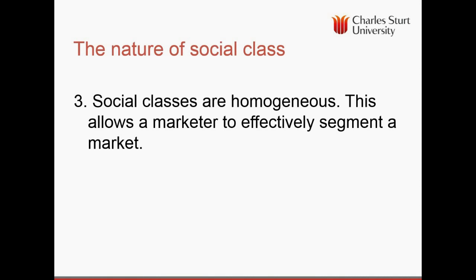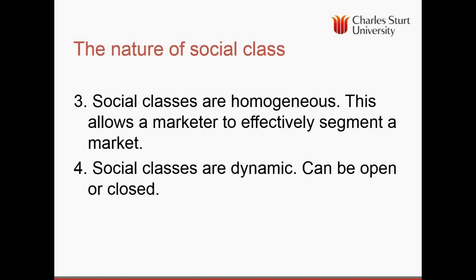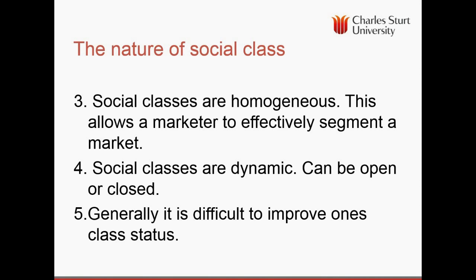Social classes are therefore relatively homogeneous — a bit like subcultures — and this allows marketers to effectively segment according to this area. Social class systems can be open or closed. A closed system is one based on racial backgrounds, such as the caste system in India, or who you're married to, such as the class system in the United Kingdom. In Australia, we have an open system, although it is generally difficult to immediately change your social class just by the acquisition of wealth, since social class also includes reputation. That's why the education of your children is often an important driver for moving up the social class ladder.